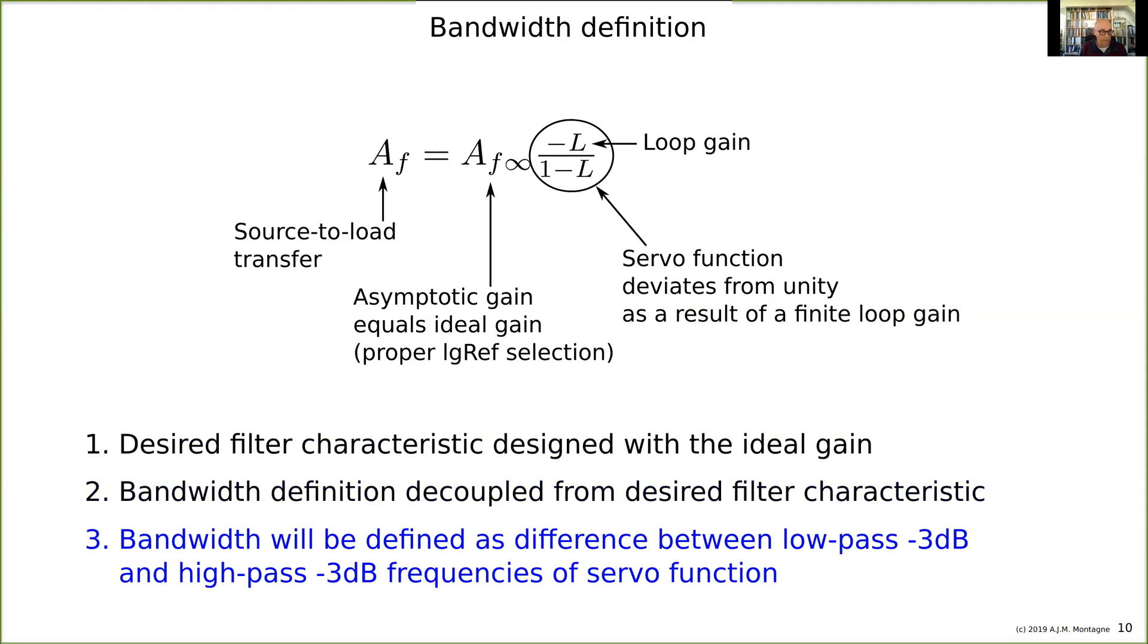And then the servo function, so this function -L/(1-L), tells us something about the difference in behavior of the real source-to-load transfer from the ideal or the desired source-to-load transfer. You can say this should be unity, then we have no difference at all. We follow the ideal characteristic perfectly.